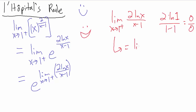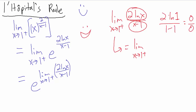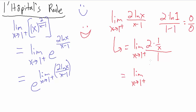By L'Hôpital's rule, we take the derivative of the top and separately the derivative of the bottom — not the quotient rule. The derivative of 2 times the natural log of x is 2 times 1 over x. The derivative of x minus 1 is just 1. So this equals the limit as x goes to 1 from the right of 2 over x divided by 1, which simplifies to just 2 over x.